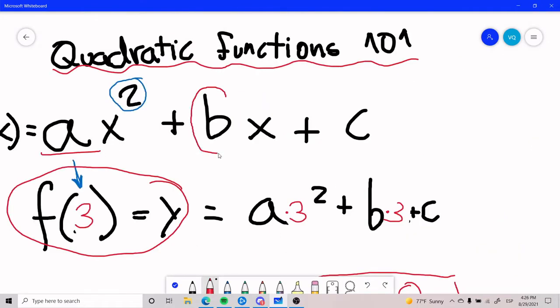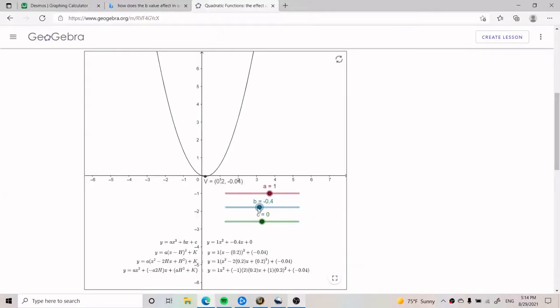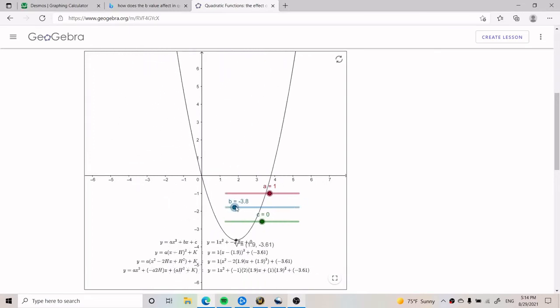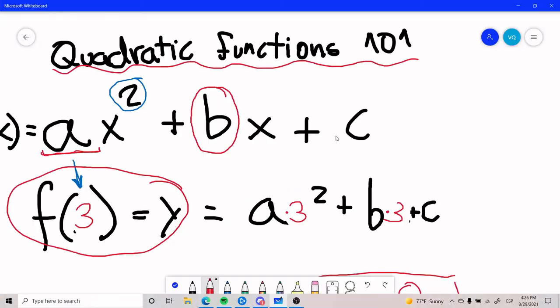The value of b we will not talk about because honestly, it changes the graph in really funky ways. And I don't think it's very necessary at the math level that you are probably watching this video for. But if anyone is interested, leave a comment and I can pop out a video on that. C is always, always, always going to be the y-intercept.